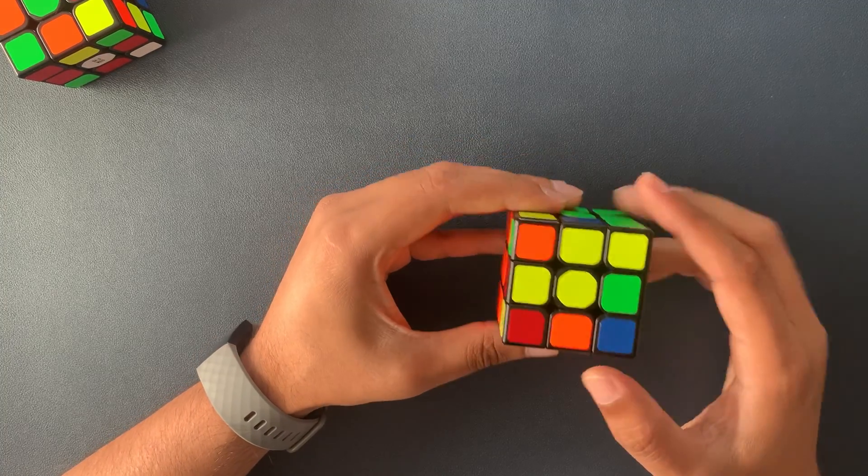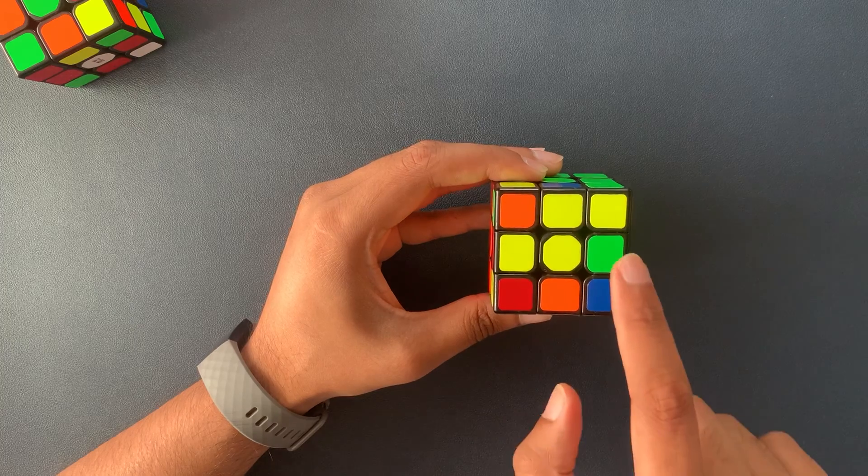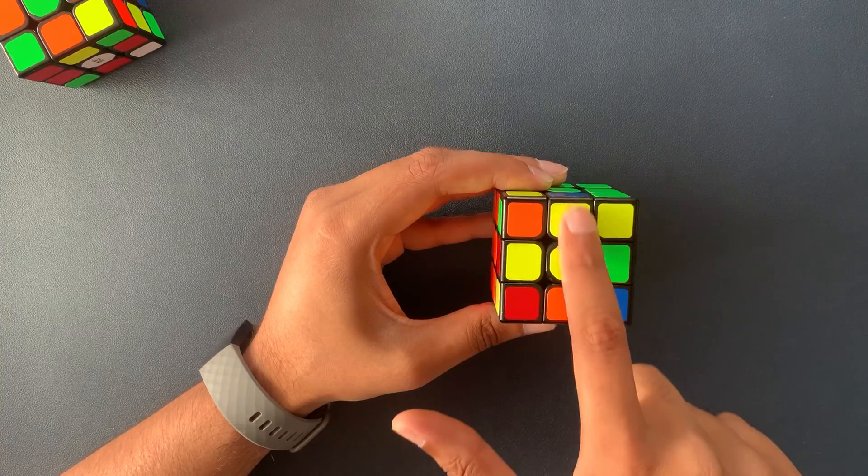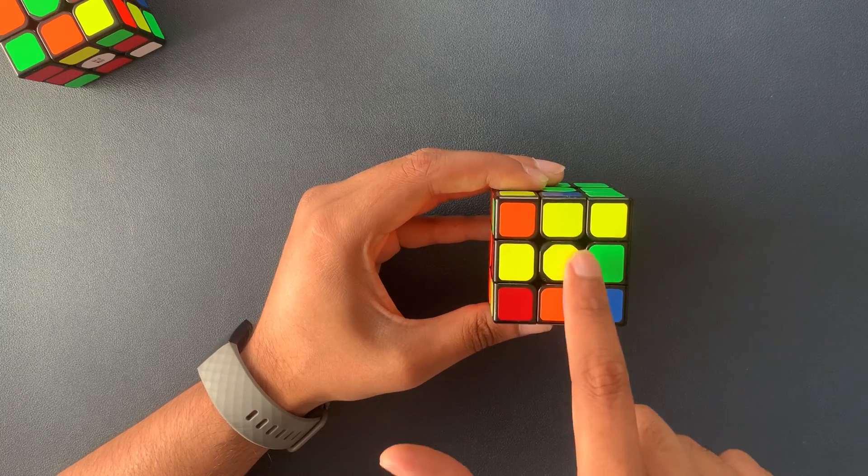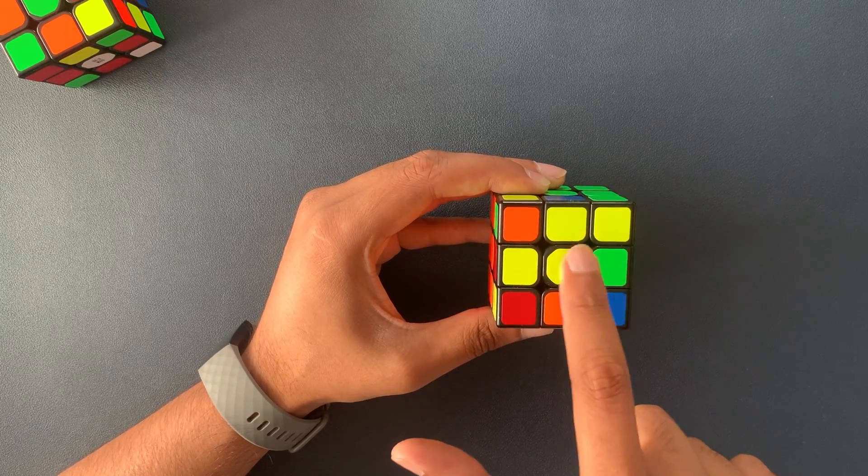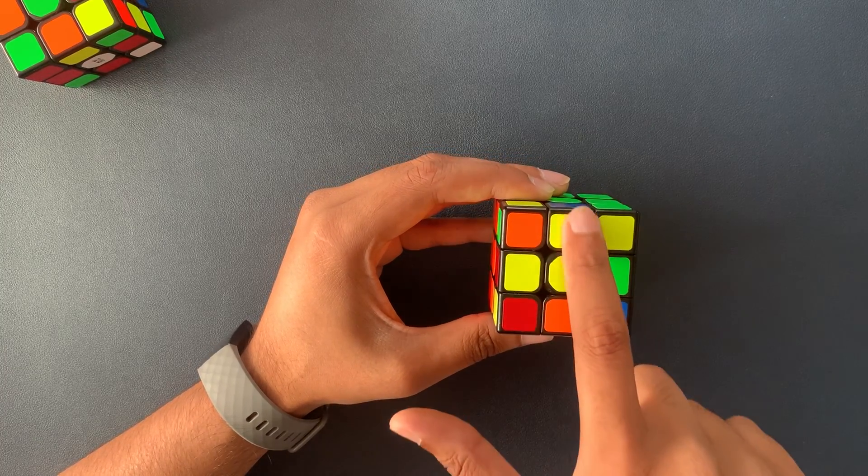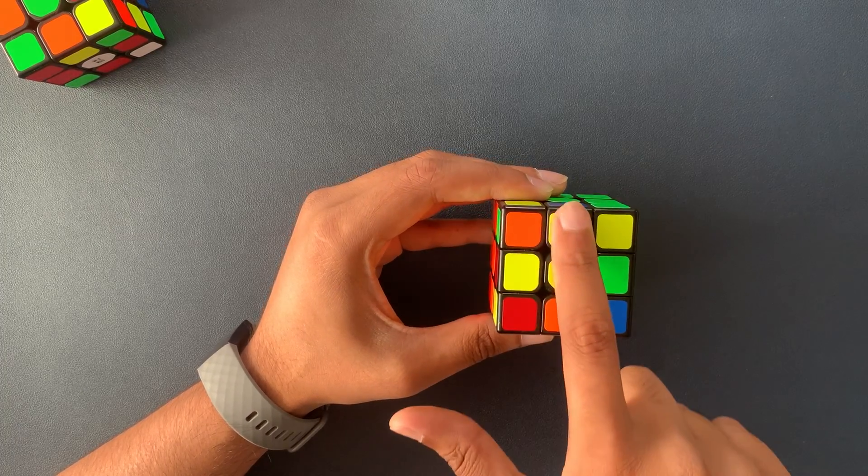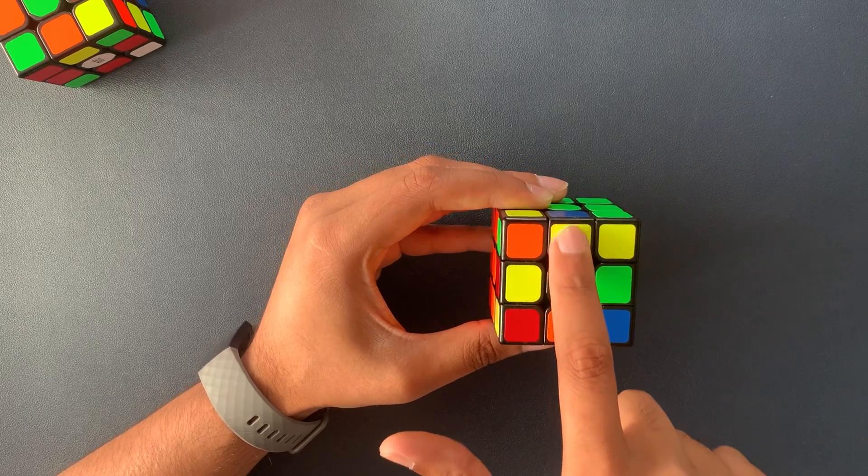We first got to have a look at the top layer and we've got to make a backwards L. So just like here we've got a backwards L. So the centerpiece is going to be yellow. We want a yellow piece at the 12 o'clock position and we want a yellow piece at the 9 o'clock position. So we've got to start off with this backwards L.